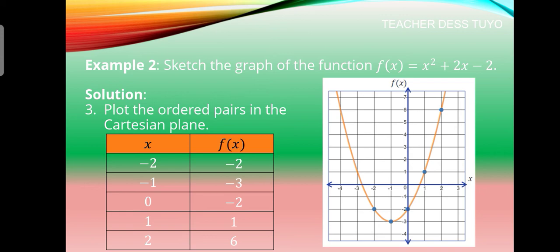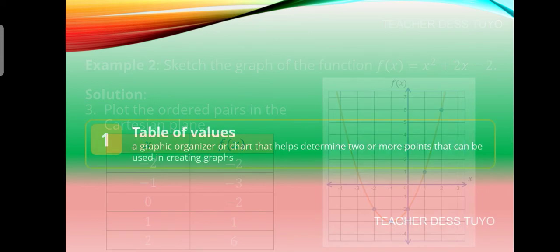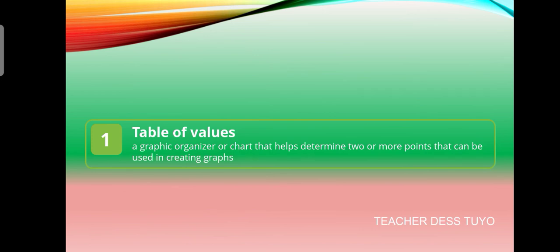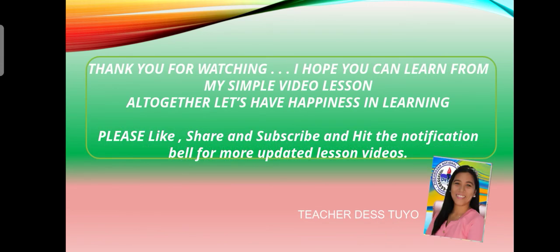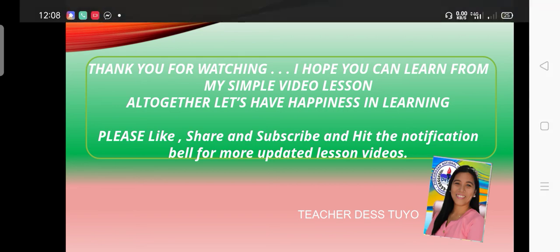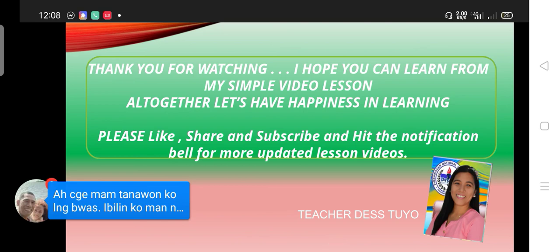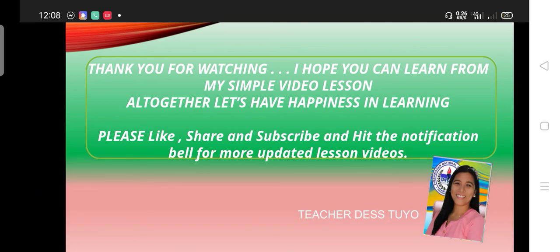As you can see, our graph is a parabola which opens upward. Remember, a table of values is a graphic organizer or chart that helps determine two or more points that can be used in creating graphs. For further discussion or questions, you can chat or PM me. Thank you for watching — I hope you can learn from this video. I am your teacher, and thank you once again for watching.